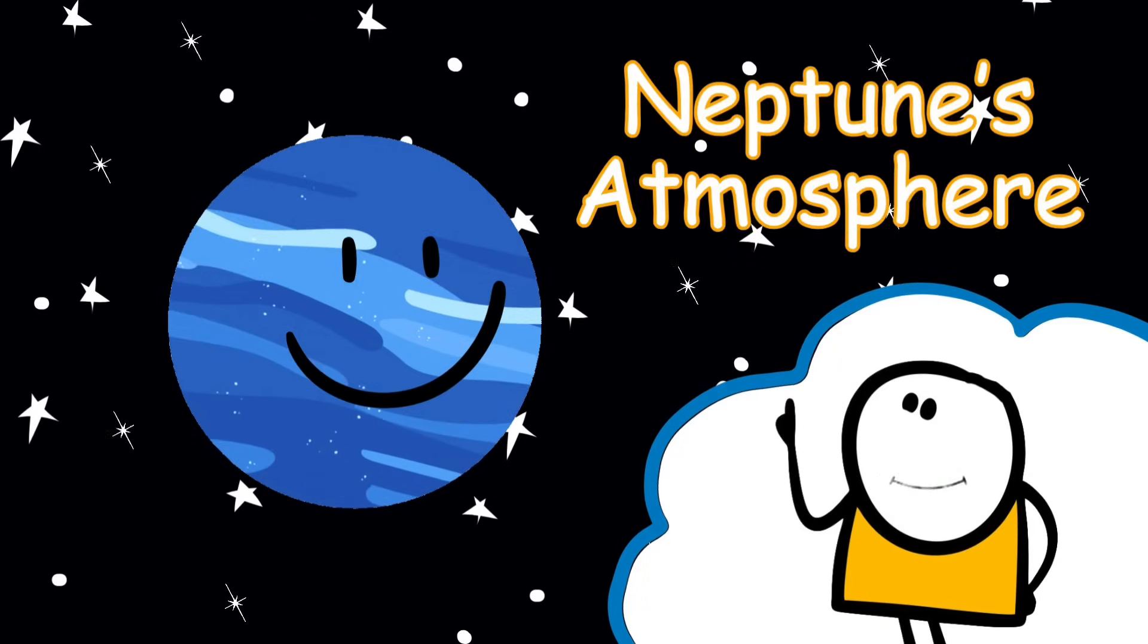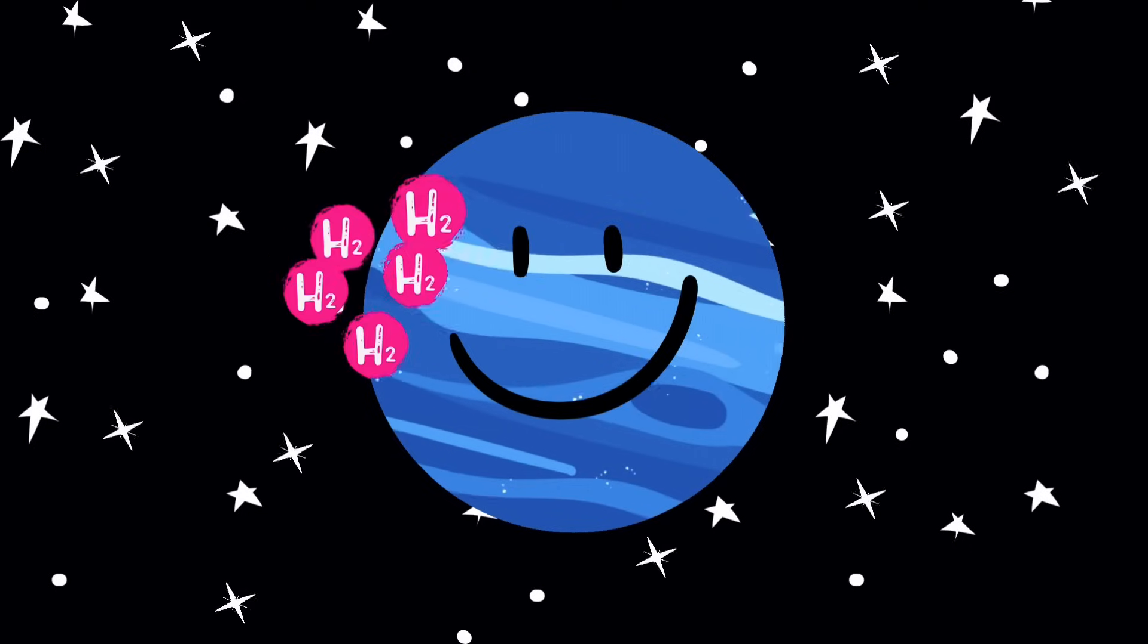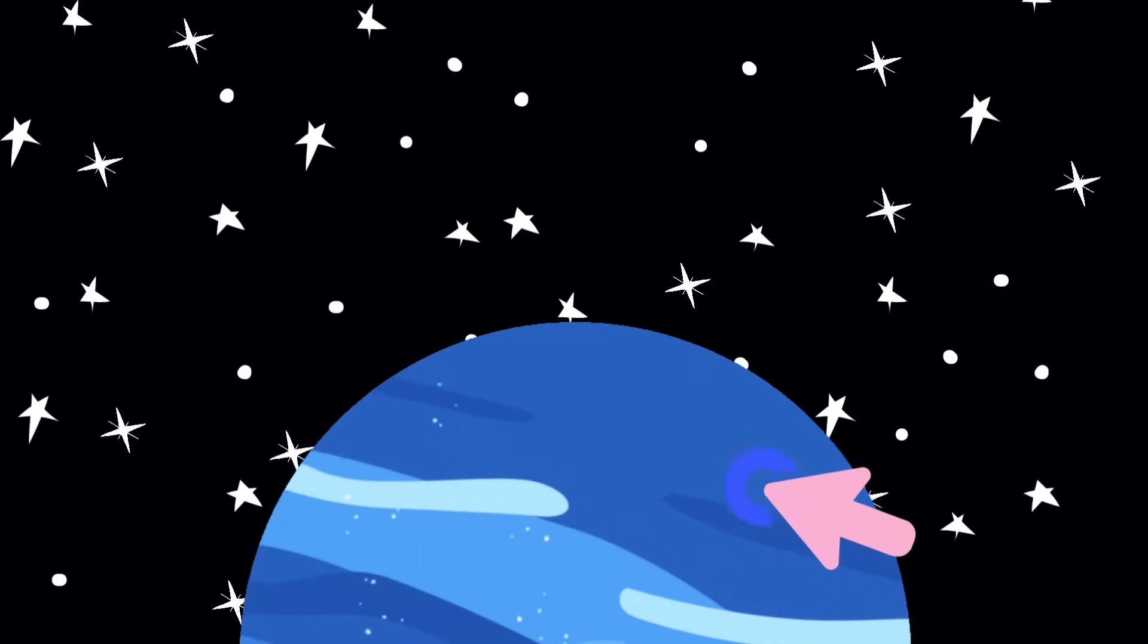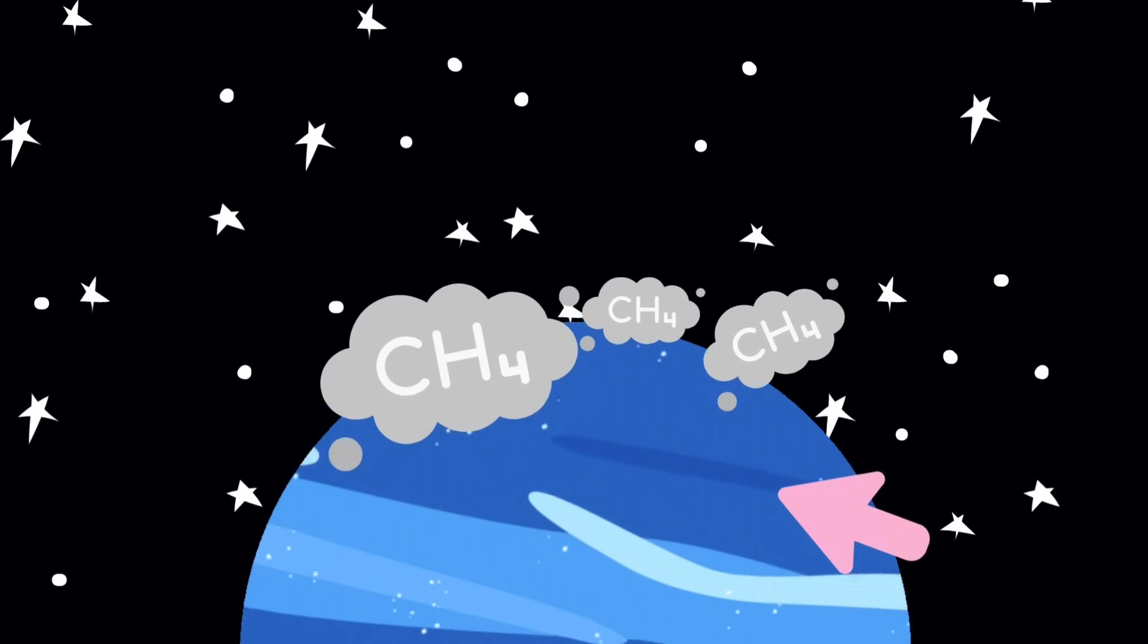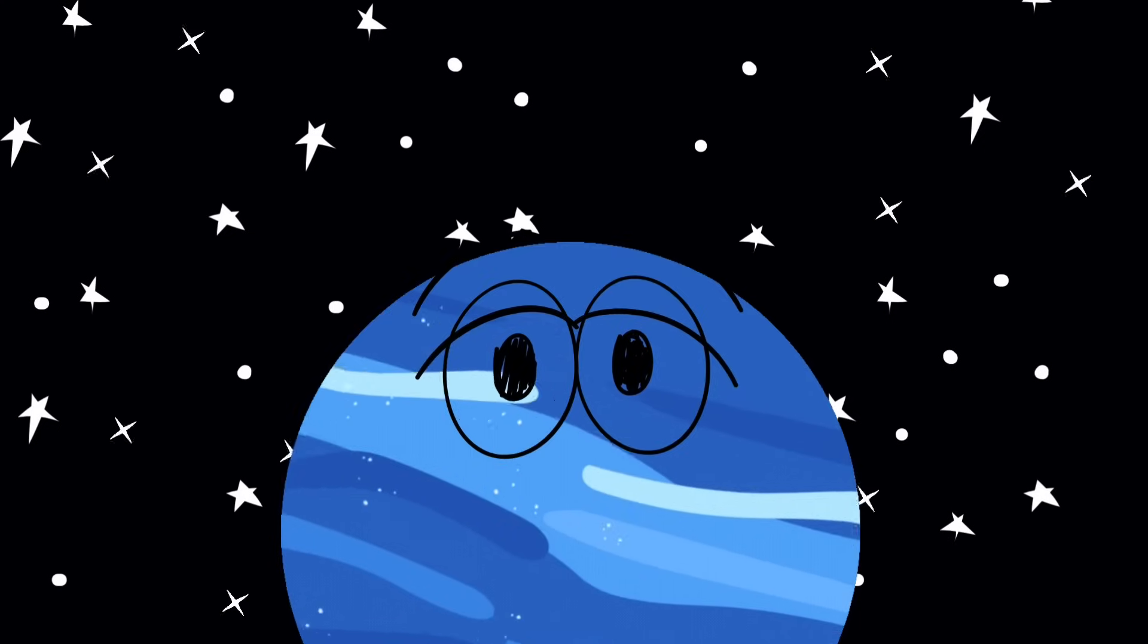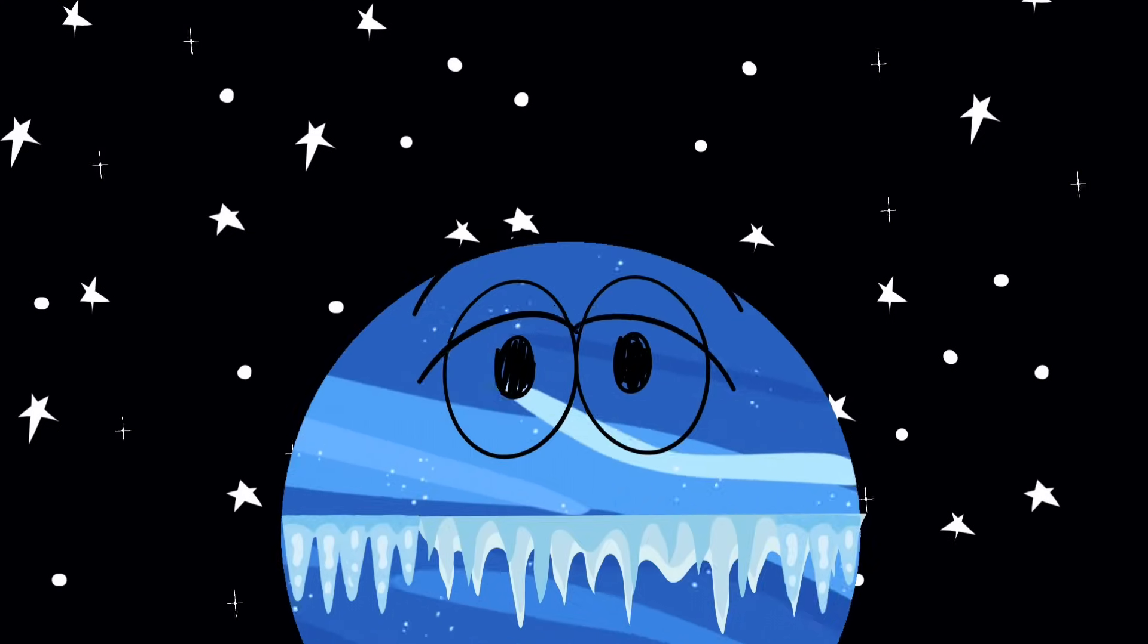Let's talk about Neptune's atmosphere. It's mostly hydrogen, helium, and methane. That blue color we all love? That's thanks to methane, the same gas that makes cow farts bad for the environment. So yes, Neptune is basically a giant, cold, spinning ball of fart-colored sadness.